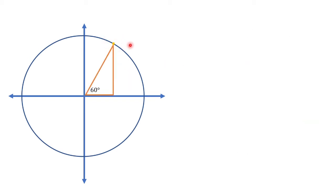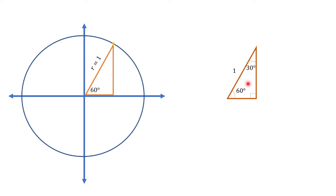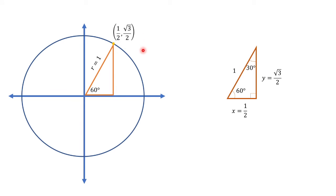To identify the coordinates of this point with an angle of 60 degrees, the process would be the same as earlier. But in this case, since the 30 degrees is located here, remember that the opposite side of 30 degrees in a right triangle is 1/2 of the hypotenuse. So now, this side would be 1/2 and this side is √3/2. Therefore, the coordinates of this point would be (1/2, √3/2).